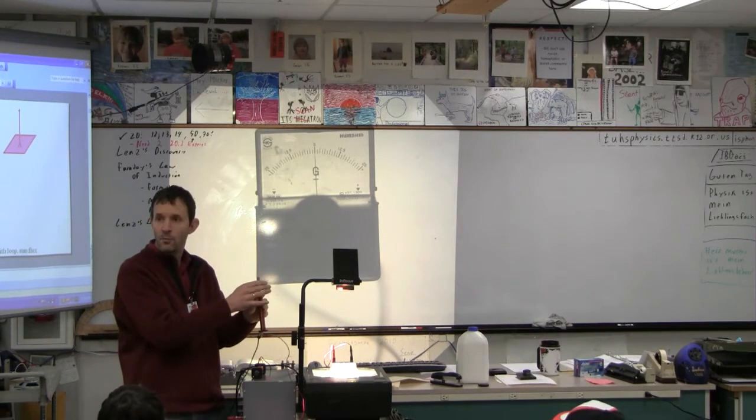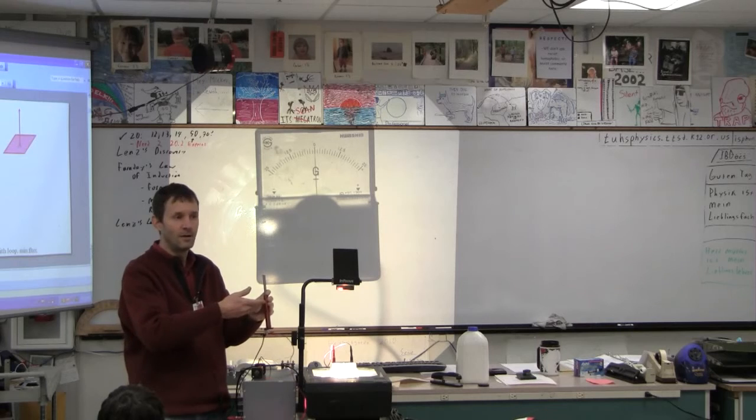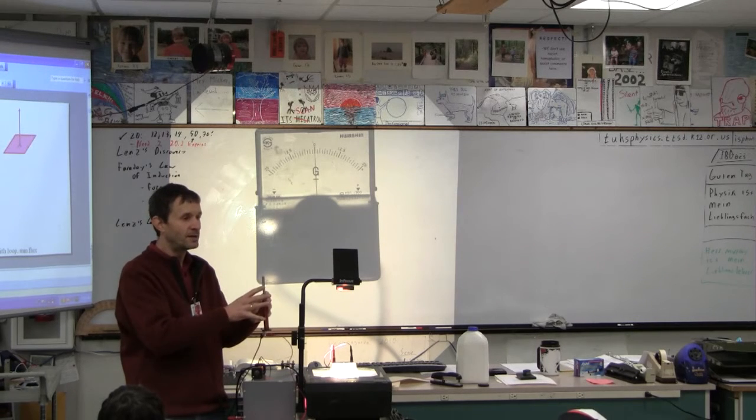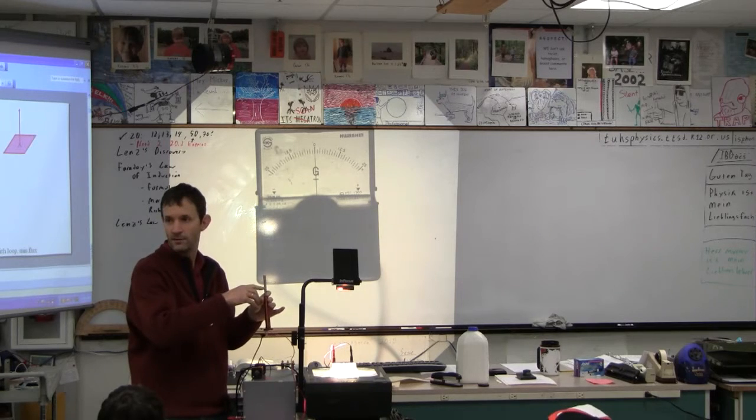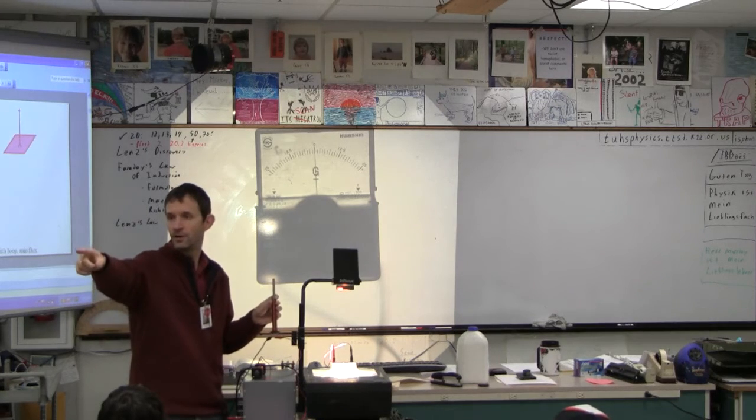So this thing, all of these little domains here are going to line up in that direction, and so the net magnetic field is the magnetic field of the coil plus the magnetic field of the metal there, and it's much, much stronger.